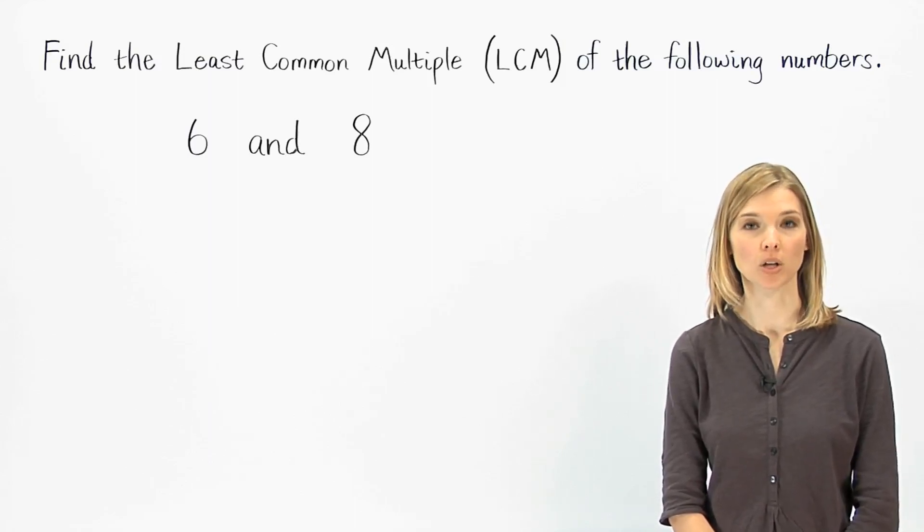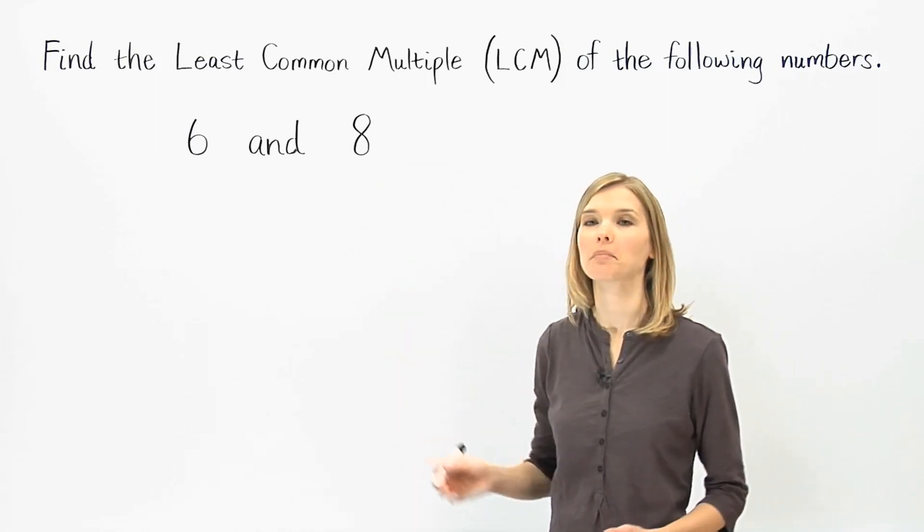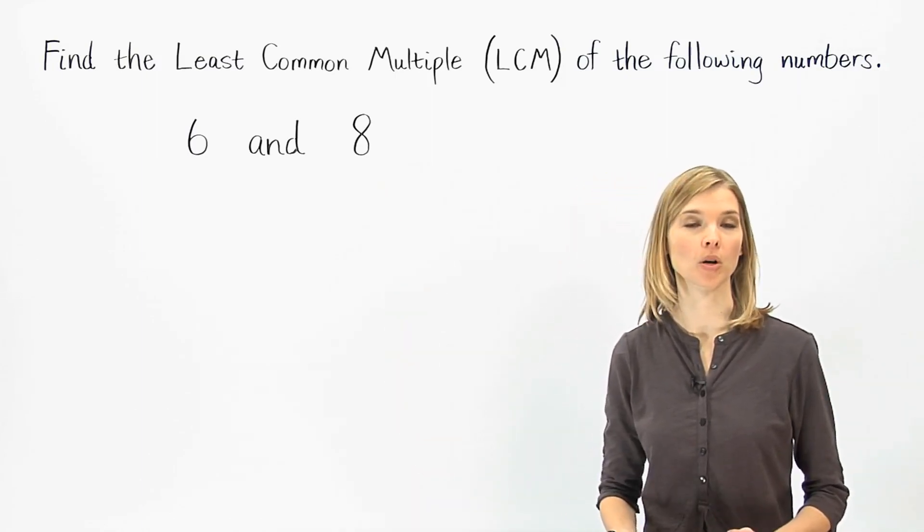To find the least common multiple, or LCM, of 6 and 8, we begin by listing the first few multiples of each number.